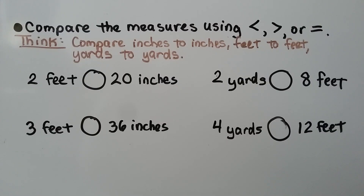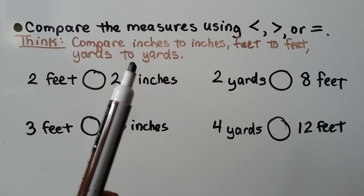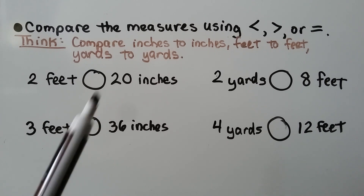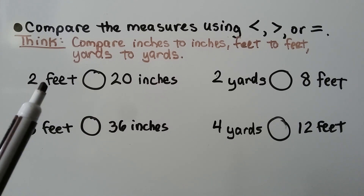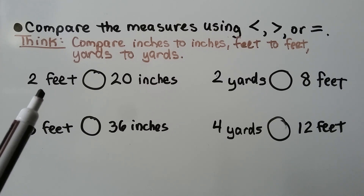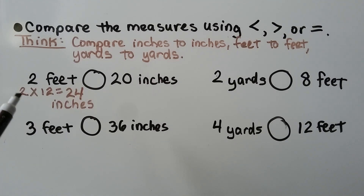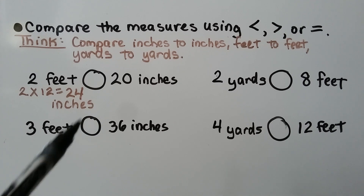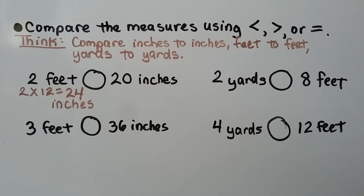We need to compare measures using the symbols less than, greater than, or equal to. We need to compare inches to inches, feet to feet, and yards to yards. To compare two feet to 20 inches, it's easier to change feet into inches. There are 12 inches in one foot, so two feet times 12 equals 24 inches. We can now see that 24 inches is greater than 20 inches, so two feet is greater than 20 inches.